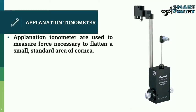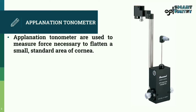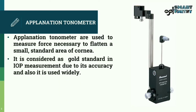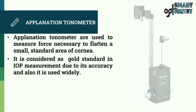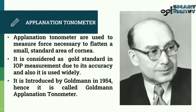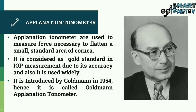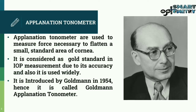The Goldman Applanation Tonometer (GAT) is used to measure the force necessary to flatten a small, standard area of the cornea. It is considered the gold standard of IOP measurement due to its accuracy and widespread use. It was introduced by Goldman in 1954, hence the name Goldman Applanation Tonometer.